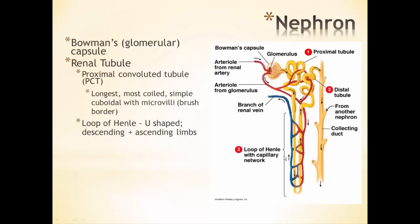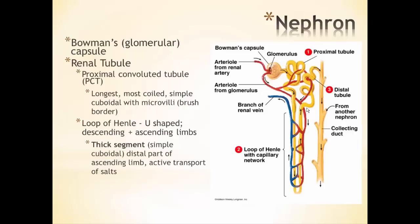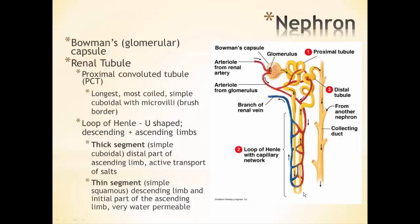From there it enters into the loop of Henle, this U-shaped bend with a descending and then ascending limb. This loop of Henle is divided into a thick segment — that's on the ascending limb, usually the more distal part — which has simple cuboidal tissue where we see active transport of salts and ions. The thin segment is the rest of the loop of Henle: the entire length of the descending limb and part of the ascending limb — all simple squamous where we see just passive diffusion of water but no salts.